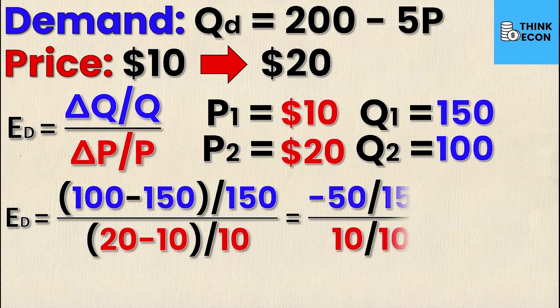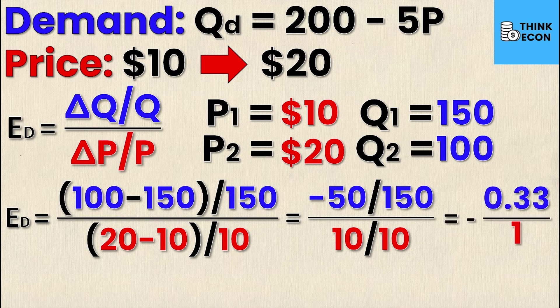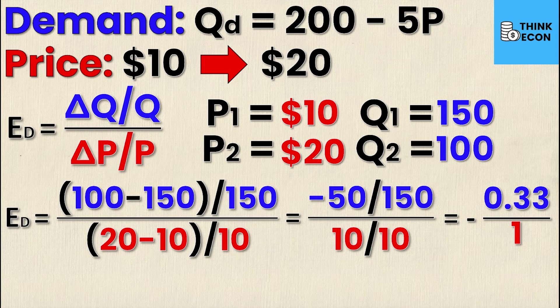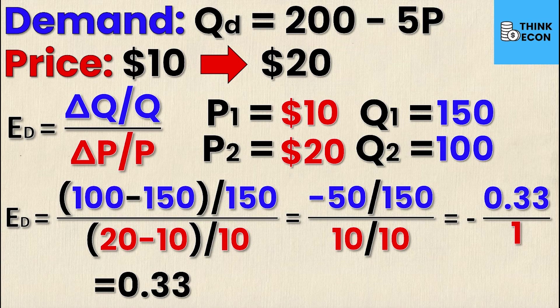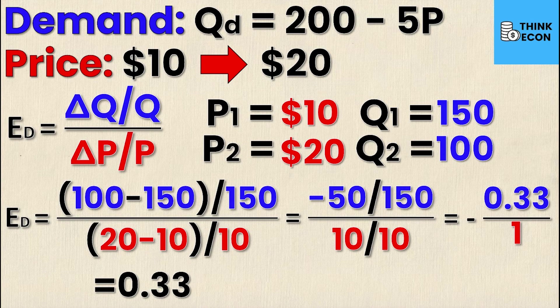Simplifying this further, I get negative 50 over 150 divided by 10 over 10, and then of course that's going to be negative 0.33 over 1. If I take the absolute value, as I want to calculate the magnitude of elasticity, it's 0.33. You might be wondering, well isn't the elasticity negative? And it is, but when you want to calculate if something is elastic or inelastic, you have to consider the absolute value because we know that the price elasticity of demand for a normal good will always be negative.